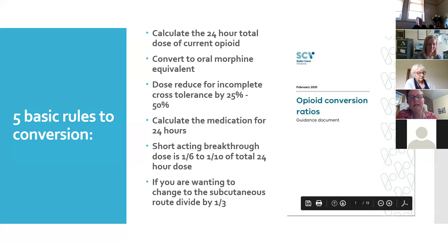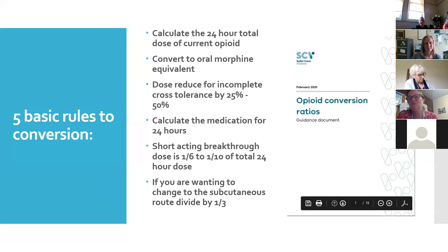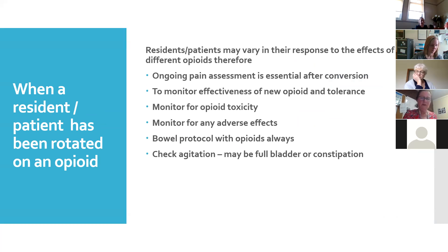Then we calculate the new medication dose for 24 hours and always make sure the patient has a short-acting breakthrough dose — which is one-sixth to one-tenth of the total 24-hour dose. So if there's 10mg of morphine in a syringe driver, dividing by six to ten gives a subcutaneous breakthrough dose of around one to two milligrams. We also look at ampoule breakdown to make things easier. We always say never do calculations on your own — always ask for help. Even as a clinical nurse consultant, I always check my calculations with someone.